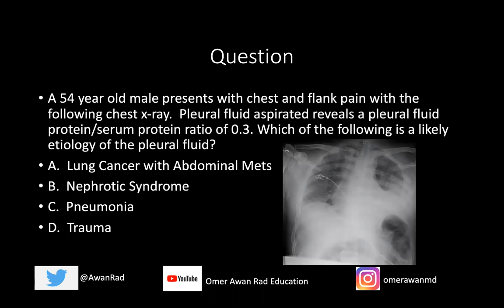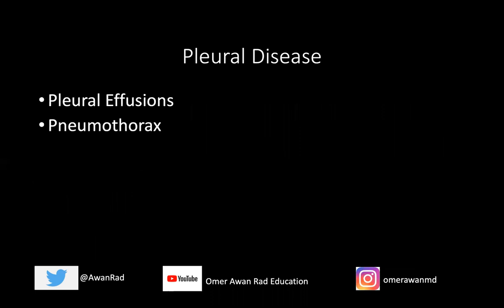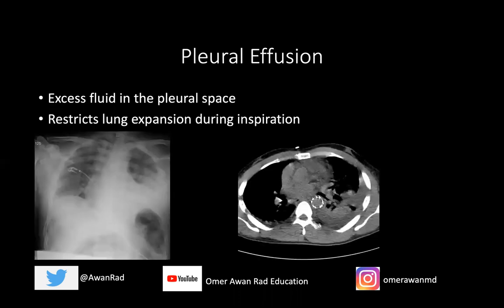We'll come back to this question at the very end after our brief tutorial. I want to talk about the two major pleural diseases: pleural effusion and pneumothorax. These are very high yield, and the USMLE expects everyone to be able to diagnose these on a chest x-ray or CT. A pleural effusion is when you have excess fluid in the pleural space, which is a problem because it restricts lung expansion during inspiration.